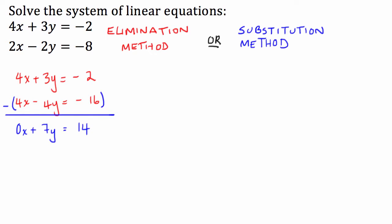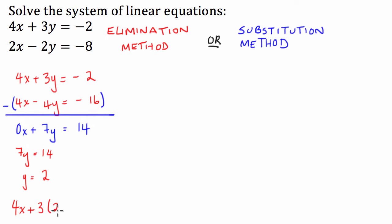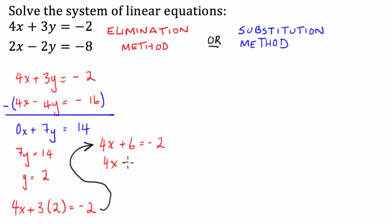So from here we can say that 7y is equal to 14, and therefore y equals 2. Once we've solved for one variable, the methods are exactly the same — we substitute that value into one of our equations. Using the top one: 4x plus 3 times 2 equals negative 2. So 4x plus 6 equals negative 2. Taking the 6 to the other side: 4x equals negative 8. So x equals negative 8 divided by 4, which is negative 2. My two solutions are y equals 2 and x equals negative 2.